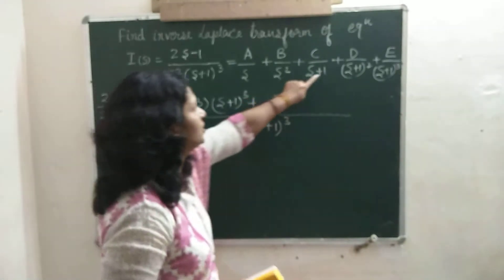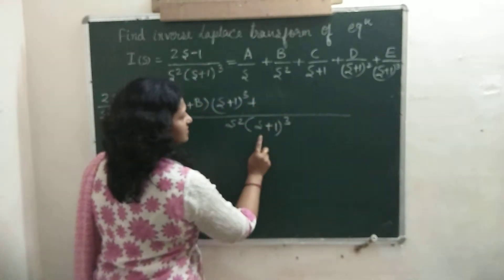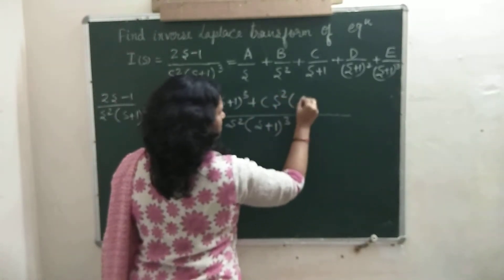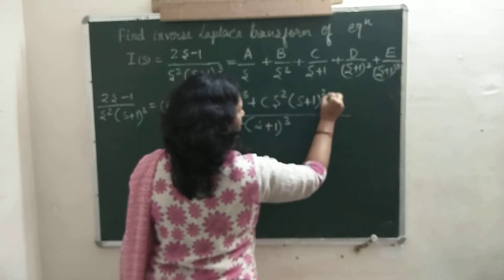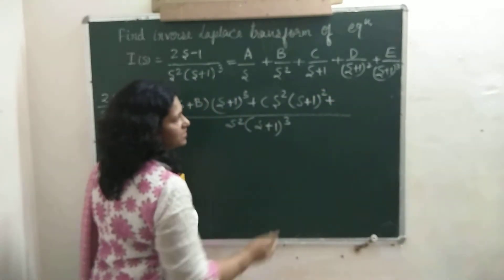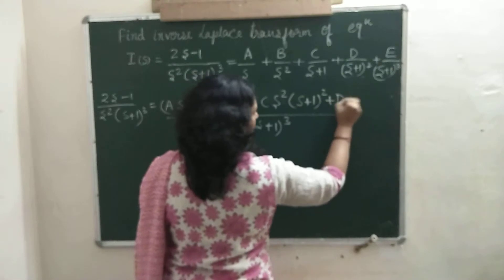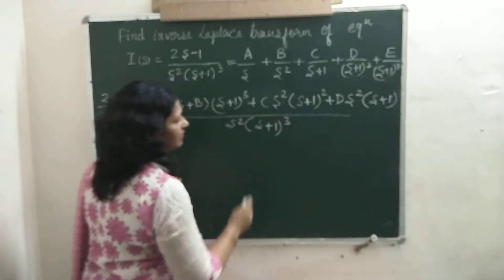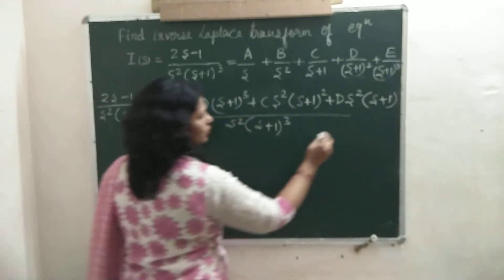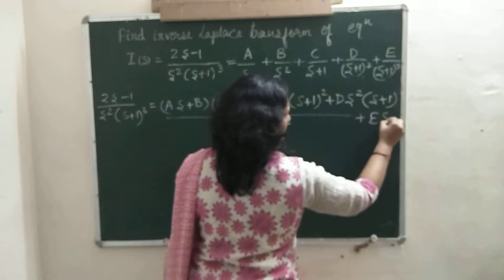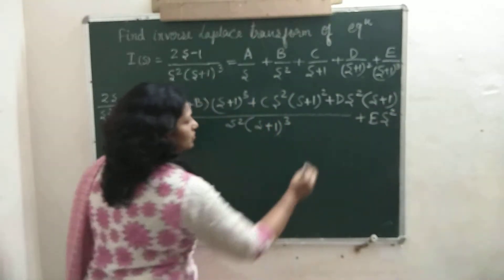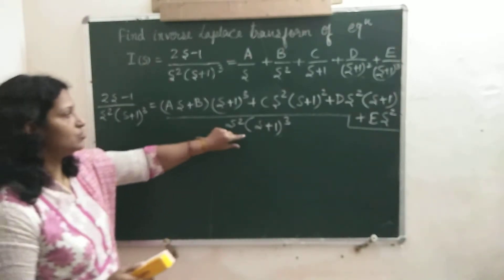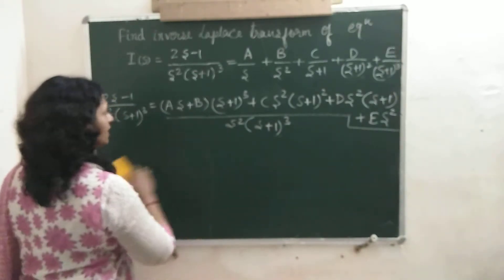For the next three terms, dividing by (S plus 1), there will come C times S squared times (S plus 1) whole square. Dividing by (S plus 1) whole square, there will come D times S squared times (S plus 1). And dividing by (S plus 1) whole cube, there will come E times S squared. The denominator is common on both sides, so we can cancel it out.